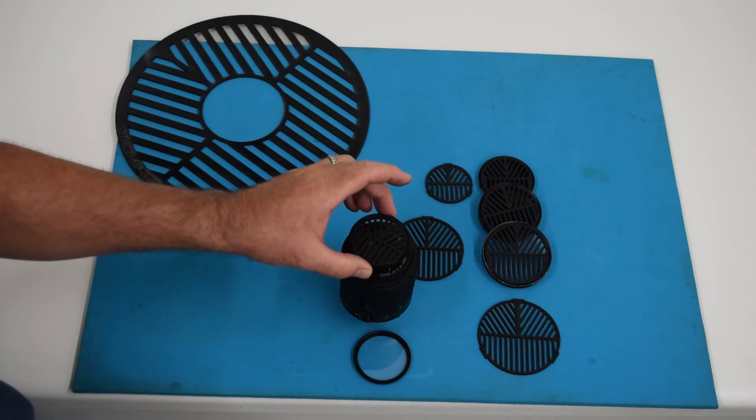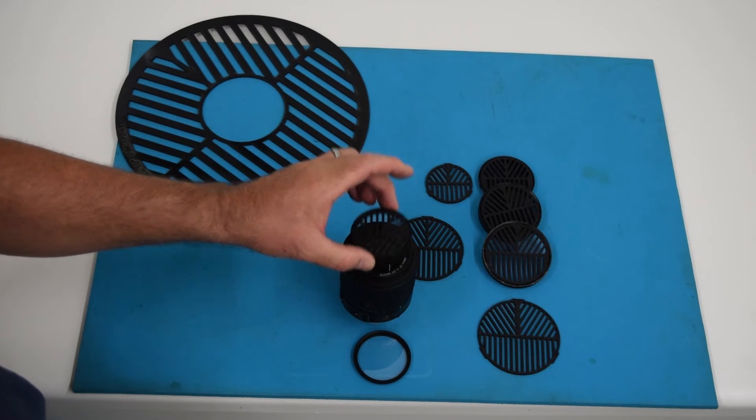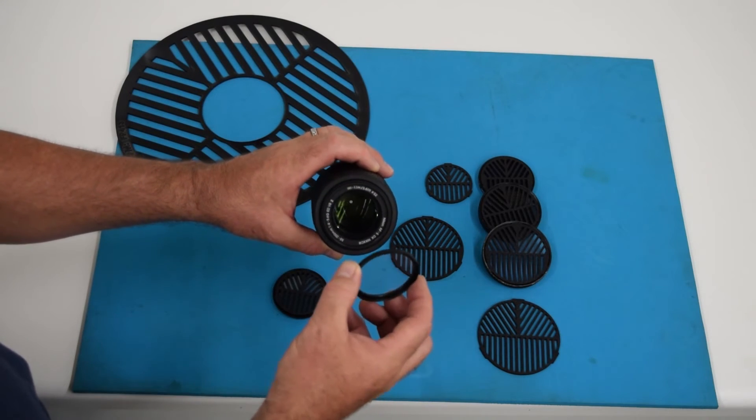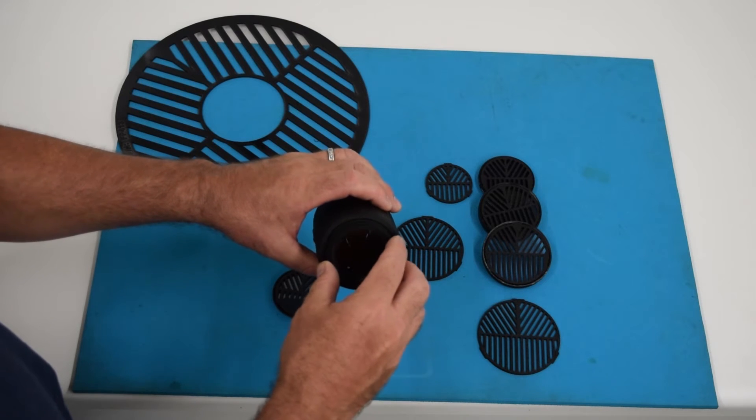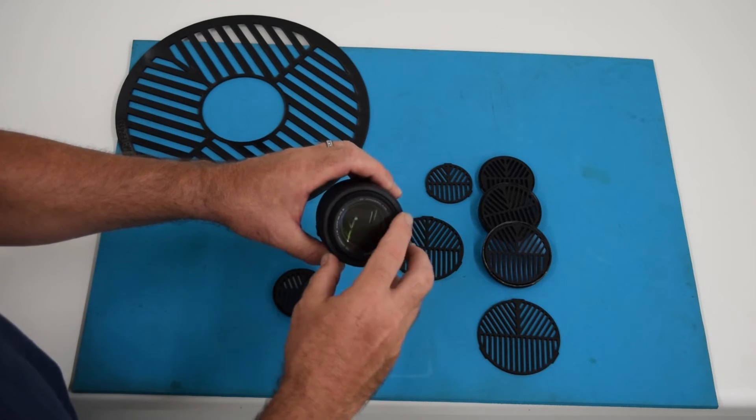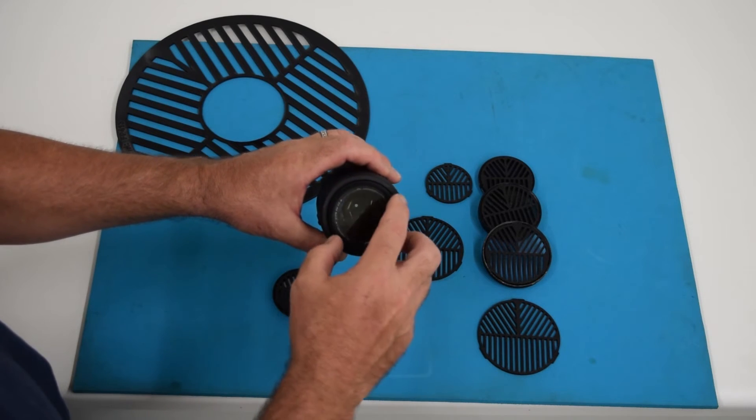Now I could screw this onto the lens directly and use it, but what I suggest is most people already have a skylight or UV filter on their camera lens to protect it because it's just cheap insurance, and I suggest you continue to do that.